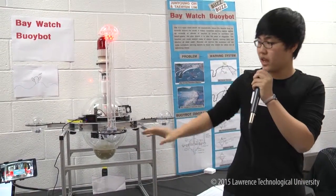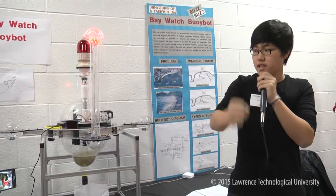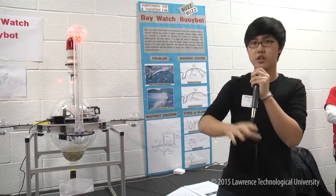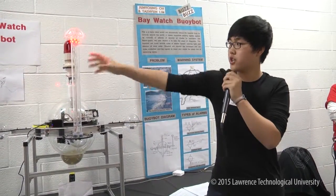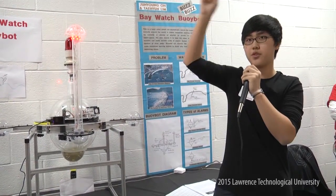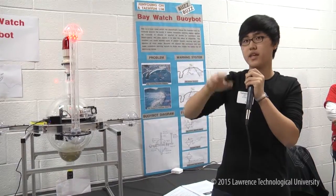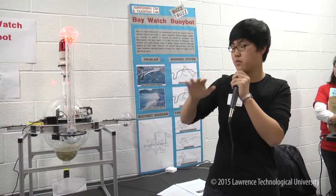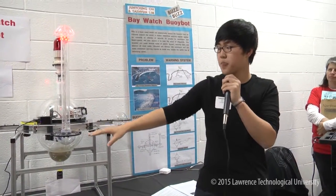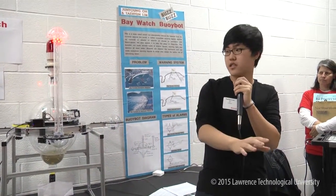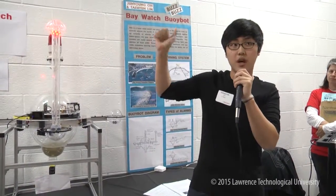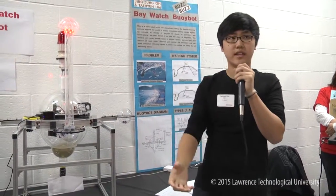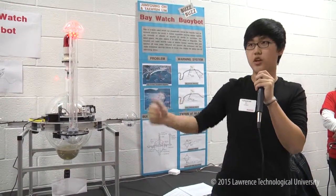We calculated this by saying: if a person is standing at the shore and the robot itself is placed 100 meters away, and the water jet is shooting water 30 meters high, we calculated that it is 17 degrees — using tangent — as the minimum angle that the person can see. At any distance, the person can see the water shoot up. We used LED light to shine the water, so even at night they can still see it.